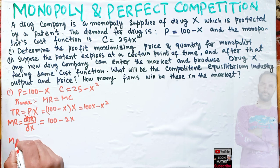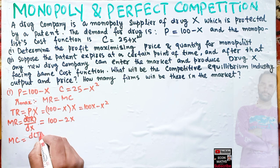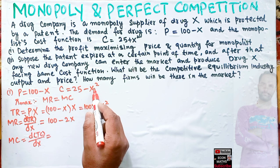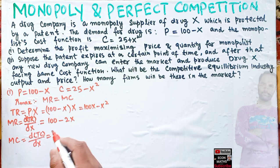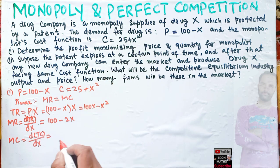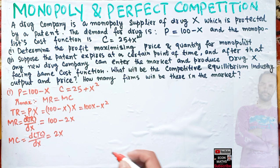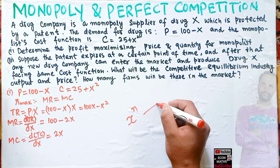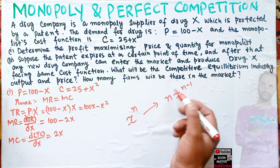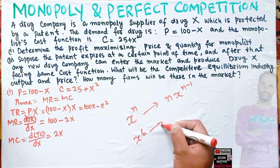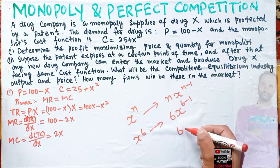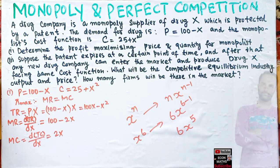Now we need to find marginal cost, which is the derivative of total cost with respect to output. The total cost is 25 + x². Derivative of the constant 25 is 0, and derivative of x² is 2x by the power rule — where the exponent becomes the coefficient and the exponent is reduced by 1. So MC = 2x.